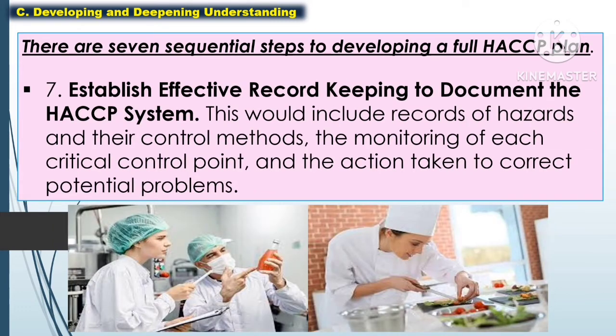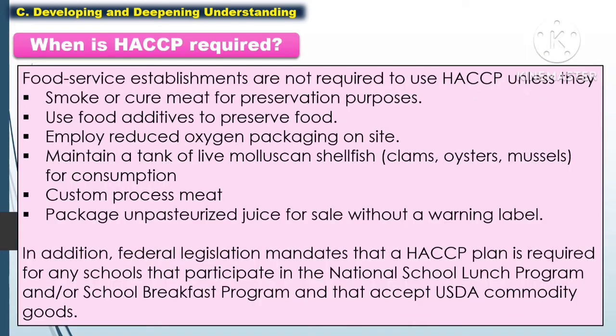The last step is to establish effective record keeping to document the HACCP system. This would include records of hazards and their control methods, the monitoring of each critical control point, and the action taken to correct potential problems.